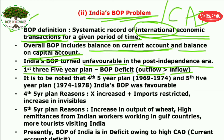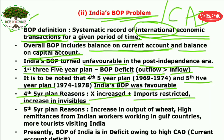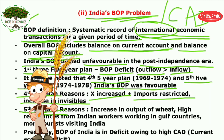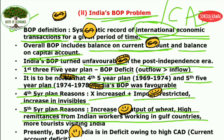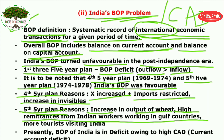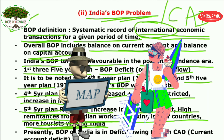However, during the fourth and fifth five-year plans, India's BOP was favorable — in surplus, with inflow greater than outflow. The reason for the fourth plan was that exports were rising, restrictions were placed on imports, and invisibles such as services and remittances increased. For the fifth plan, the Green Revolution increased wheat production enabling more exports, and high remittances from Indian workers in Gulf countries boosted inflow, along with flourishing tourism.